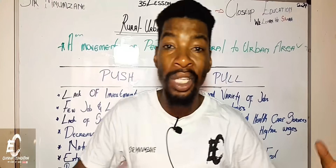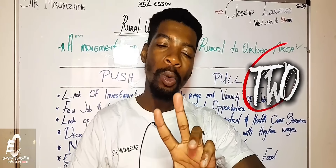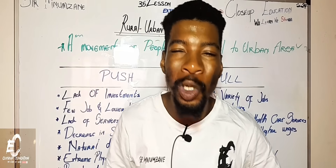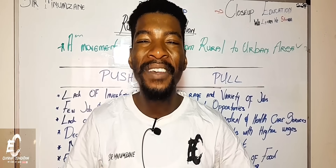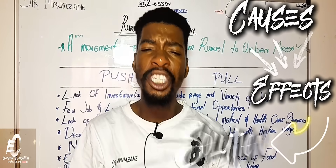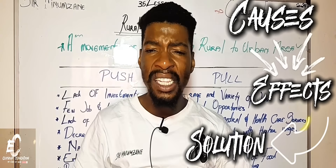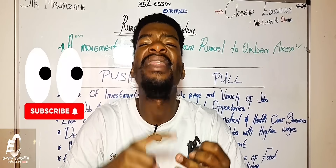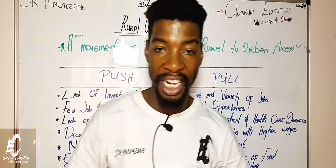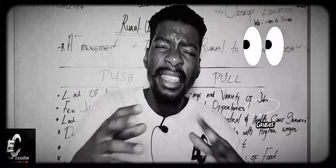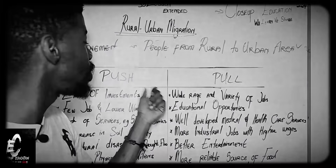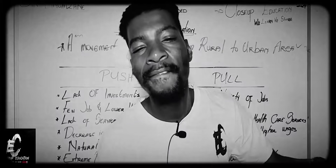In this video, we are here to understand only two, maybe three things. We might actually do another extended lesson because when we learn about geography, it tells us the causes, the effects, and also the management. But in this video, I want us to look at the causes and the consequences of rural to urban migration. When looking at the causes, we only have to look at two factors: the push factor and the pull factor.